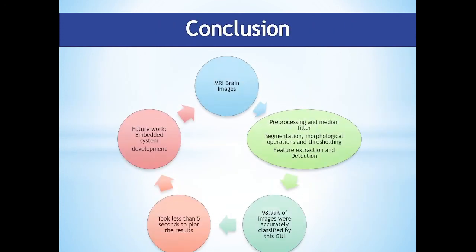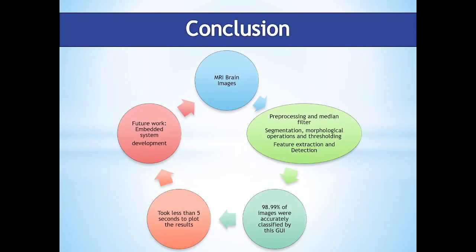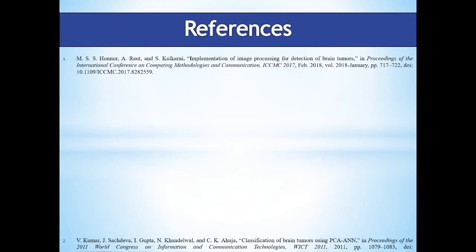In conclusion, our dataset included images of brain MRI. Preprocessing and median filtering were used for noise removal, removal of hue and saturation, and enhancement of image quality. Segmentation was done using morphological operations and thresholding. Three features — solidity, area, and bounding box — were extracted. Detection is based on area thresholding. 98.9% of images were accurately classified by this GUI, taking less than 5 seconds to plot results. In the future, we will develop an embedded system for not only detecting but also classifying different types of brain tumors. These are the references for the literature review.